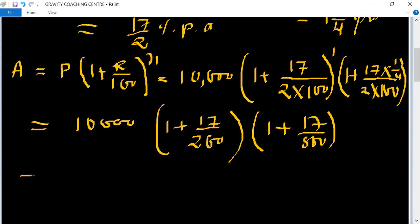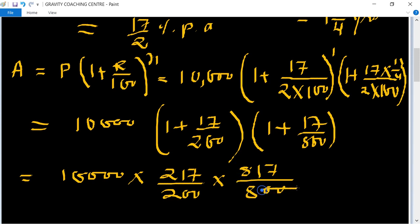= 10,000 × (217/200) × (817/800). After taking LCM, we get 217/200 × 817/800. Canceling zeros...